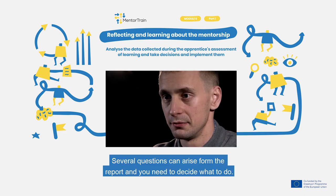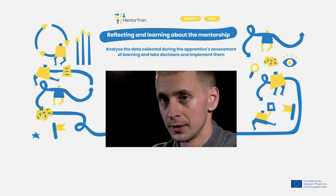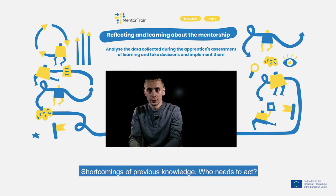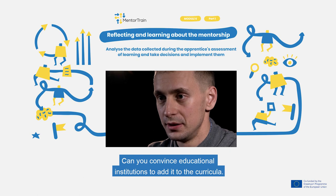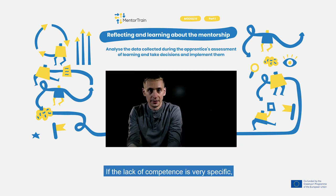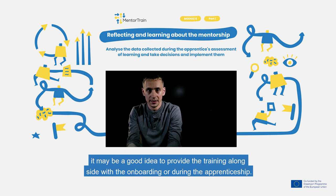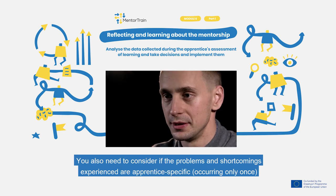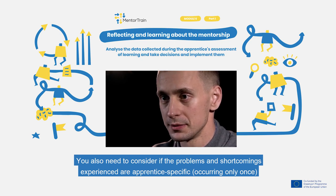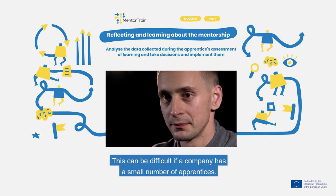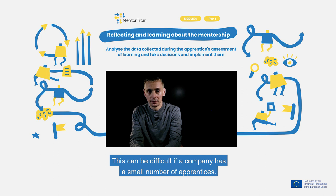Several questions can arise from the report and you need to decide what to do. Regarding shortcomings of previous knowledge: who needs to act? Is it something specific to your company and can you solve it yourself? Can you convince educational institutions to add it to the curricula? If the lack of competencies is very specific, it may be a good idea to provide training alongside the onboarding or during the apprenticeship. You also need to consider if the problems and shortcomings experienced are apprentice-specific, occurring only once, or systematic and reoccurring. This can be difficult if a company has a small number of apprentices.